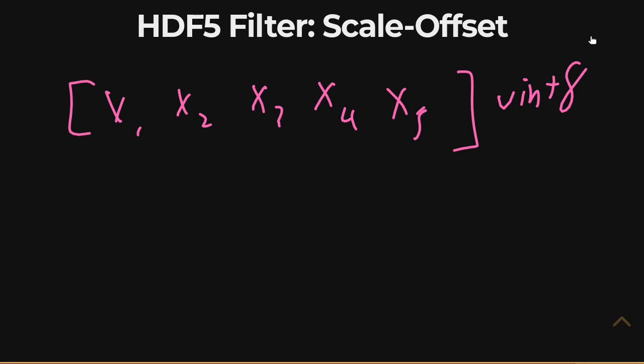What the Scale Offset filter will do is it will calculate first the offset of this data set. It will say, I've got these five elements in my data set, I'm going to calculate the mean of those numbers. Since I told you they were all above 200 but less than 220, let's say that the mean came out to be 210.